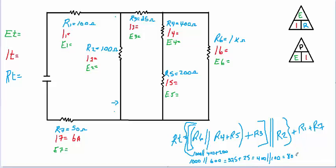400 in parallel with 100 gives us 80. Now we add on our two last resistors: resistor 1 is 100 ohms, giving us 180, and then another 50 ohms for resistor 7. So we end up with a total resistance RT of 230 ohms. We can go ahead and write 230 ohms over here.